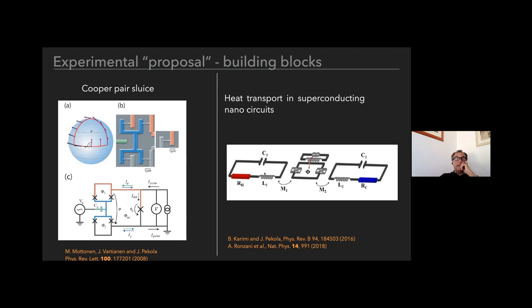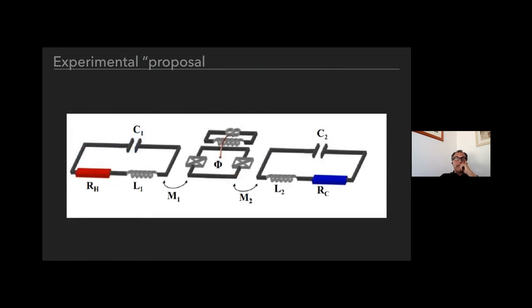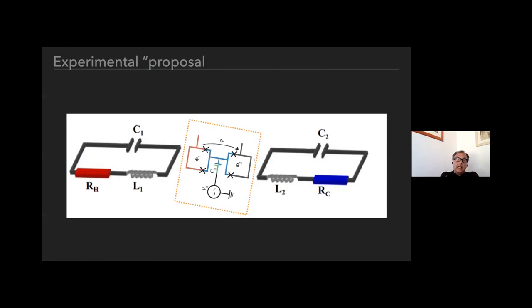Of course, as a theorist it's very easy to combine. The proposal is pretty natural: something like having two Cooper pair sluice loops connected to two LC circuits might give a direct experimental realization of an adiabatic heat engine. Of course, this is theory game—it's much more difficult to realize experimentally. But I think it's not totally crazy to imagine realizing such a combined circuit.